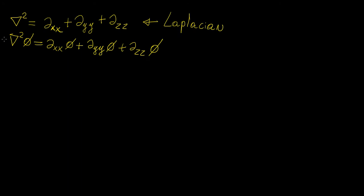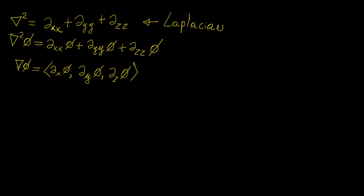Now where does this actually come from? Well, if you have the gradient of a scalar field, you know that this is going to turn out to be a vector. It can be written as the partial of phi with respect to x, the partial with respect to y, and the partial with respect to z. Now in order to obtain an expression for the second derivative and return to a scalar field — since the gradient is a vector — we need to take a dot product with another vector.